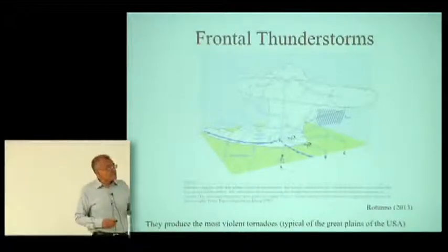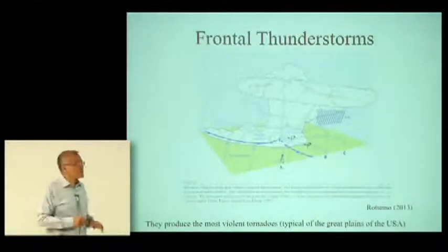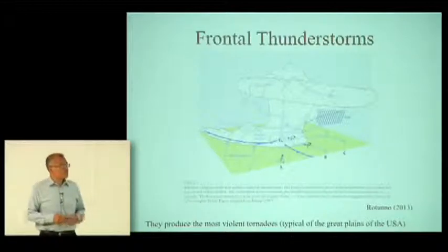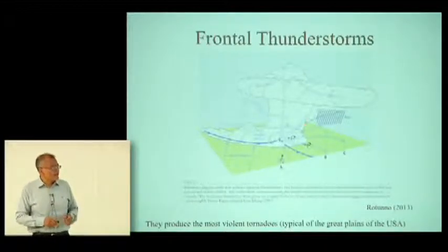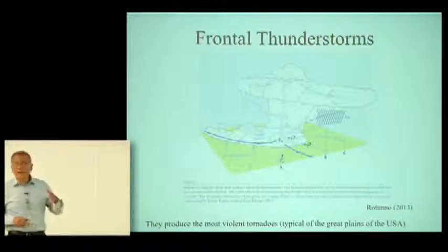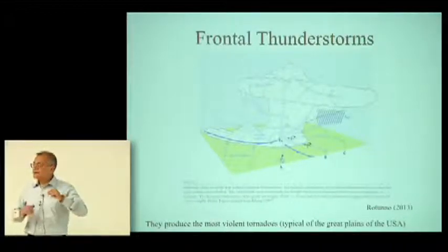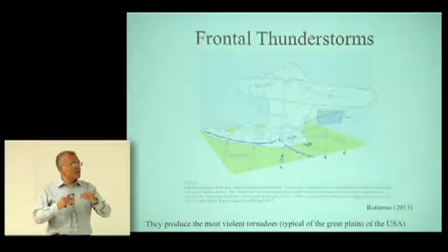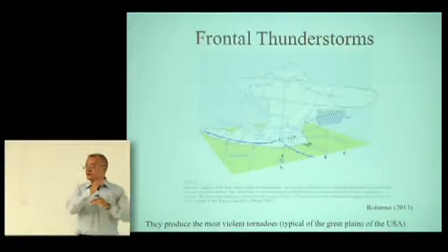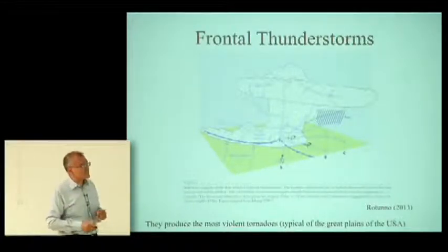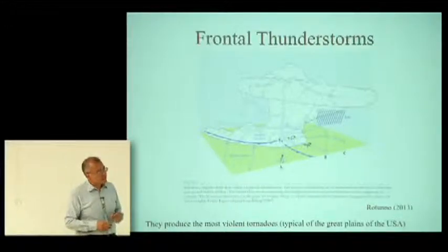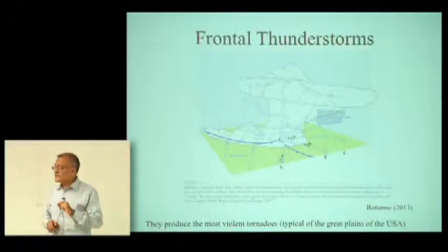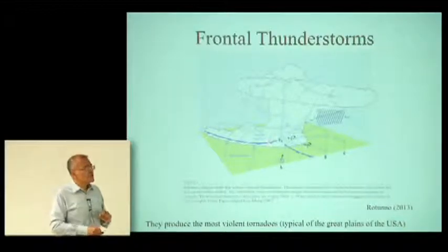This is another one: a frontal thunderstorm. This is the case when we have cold air encountering warm air — the warm air goes up and forms a thunderstorm. Under certain conditions, about one third of these kinds of thunderstorms produce tornadoes.